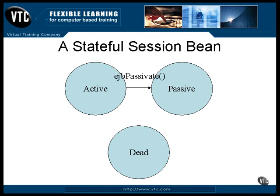Transforming all of your data into a serializable form is the job you need to do in the method EJB passivate. Any method call while the bean is passive will cause a wake-up call — a call is made to EJB activate, which reverses the action taken by EJB passivate, and the object is then moved back into memory. If you don't have any code in EJB passivate, you won't need any in EJB activate.